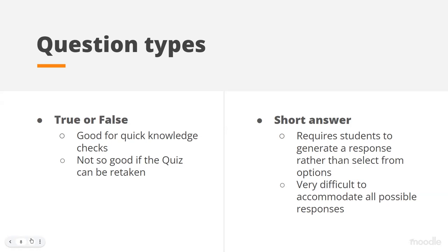I have to confess that I just don't use true or false question types at all, primarily because the quizzes I do, people can take them more than once — usually at least three times. So it's pointless, because if you get a true or false question wrong the first time, you're definitely going to get it right next time. However, people in the discussion forum said they like to use it as a very quick, do-it-once-only knowledge check, perhaps with a time limit.